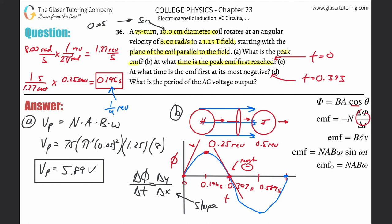You might notice the flux itself is negative there and wonder about the sign, but that depends on how we define the normal direction and rotation direction. Don't worry too much about that negative sign for now — it's indicating direction. So the answer for part (c) is t ≈ 0.393 seconds.